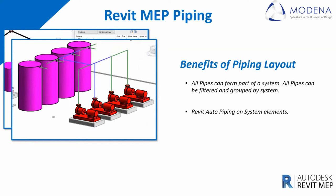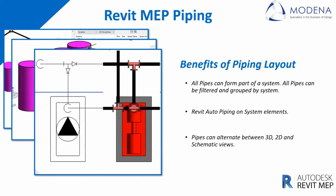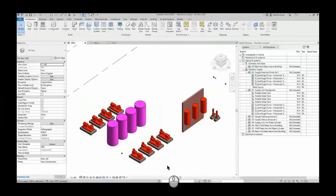Revit can auto-pipe system elements. Once we have our layouts done, we can choose the system and tell Revit exactly where to place the piping for us. Pipes can also be alternated between 3D, 2D, and schematic views. So you choose how you want to display your pipes, routes, and systems.